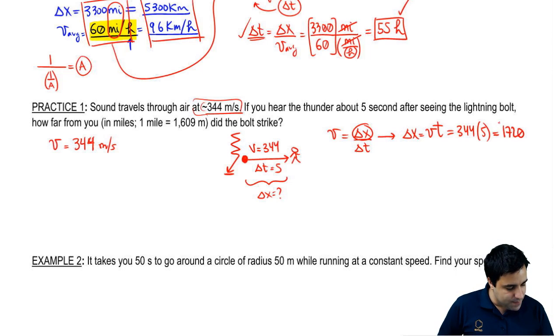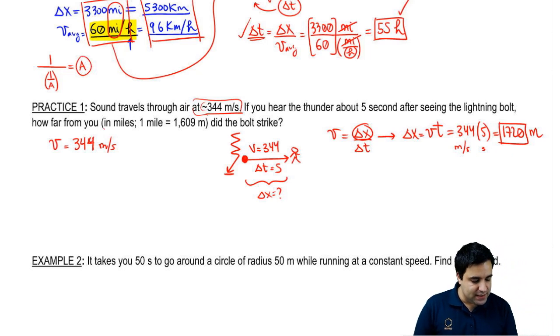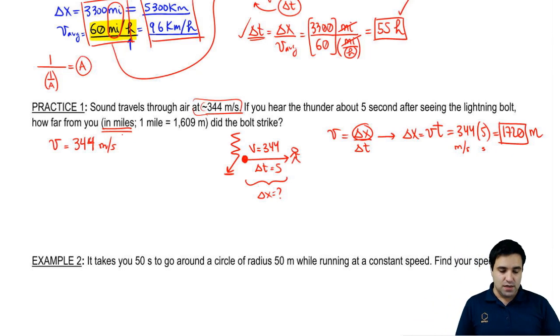If you multiply it, I have it here. It's 1720. Now, 344 was meters per second, and five was in seconds. So you get 1720 meters. The problem is the question asked you to give this in miles. And one mile is 1609 meters.